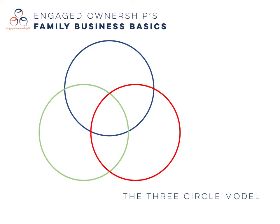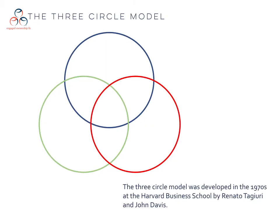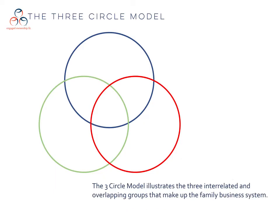Hi, this is Amelia Renkert-Thomas of Engaged Ownership and we're here today with Family Business Basics. We'll be talking about the Three Circle Model. The Three Circle Model was developed in the 1970s at the Harvard Business School by Professors Renato Tagiuri and John Davis. It illustrates the three interrelated and overlapping groups that make up the family business system.